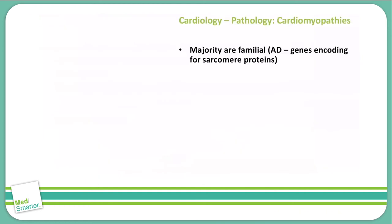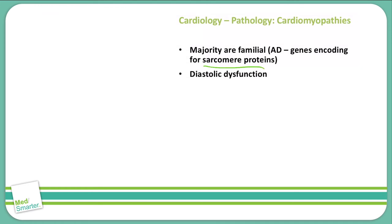A majority of cases of hypertrophic obstructive cardiomyopathy are actually familial. These are often autosomal dominant gene-coded, and the specific gene encodes sarcomere proteins. This leads to a diastolic dysfunction, and often we see syncope during exercise.